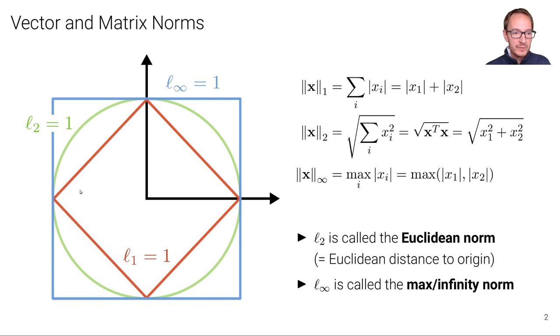And for the L1 norm, we get this diamond shape here in red because, for example, the vector (1, 0) has norm 1, but the vector (0.5, 0.5) also has norm 1, and the vector (0, 1) also has norm 1. And similarly for the negative sides because we take the absolute value of each element.